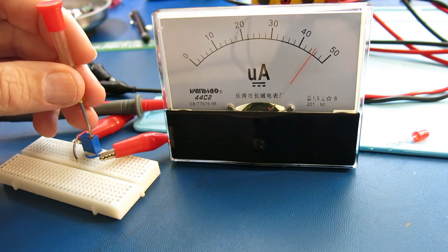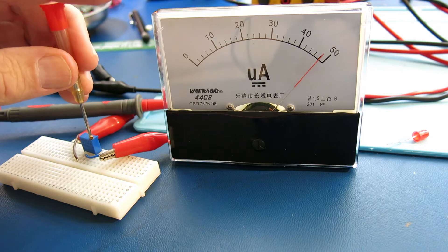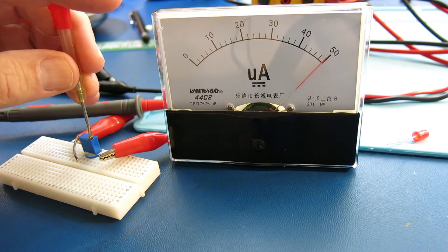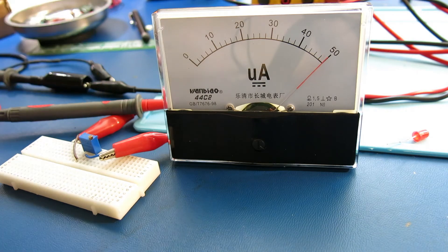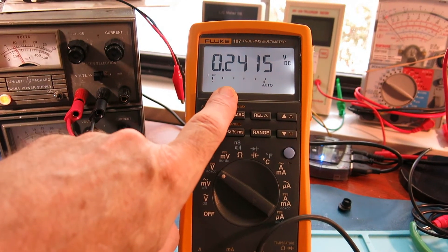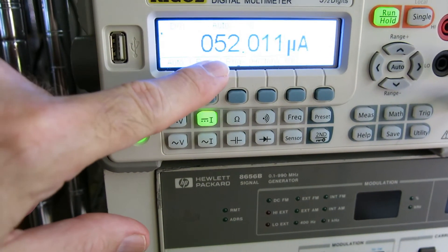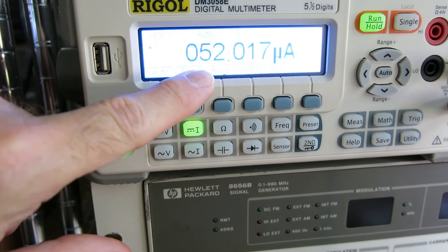I'm going to adjust my little variable resistor here to get full-scale deflection. And there it is. The voltage across the meter at full-scale, we'll say 242 millivolts. Full-scale deflection current is 52 microamps.